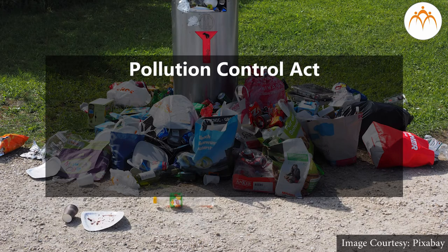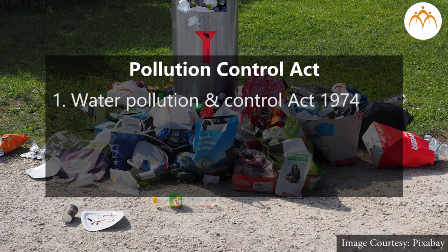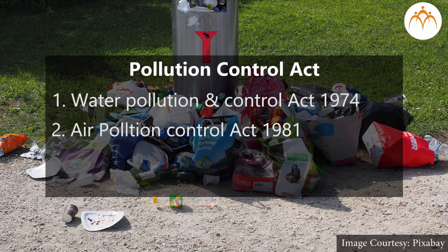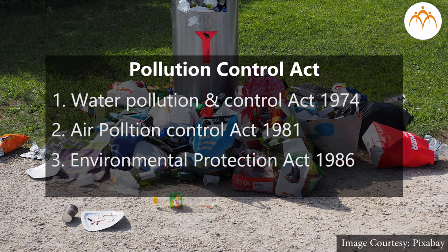It is extremely important to control all types of pollution. The Government of India has made some laws for this purpose, including the Water Pollution and Control Act of 1974, Air Pollution Control Act 1981, and Environmental Protection Act 1986. It is vital that we all follow these laws so that pollution can be controlled. It is also important that all of us join hands to do this work, and let us start controlling pollution from ourselves.